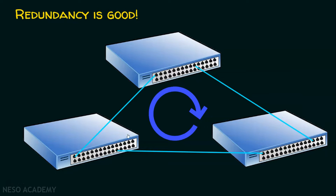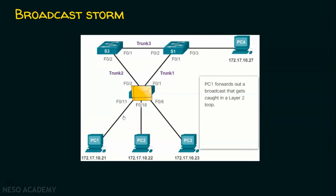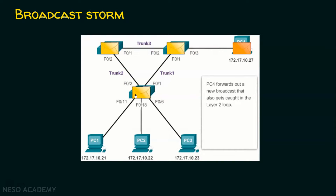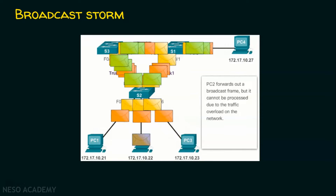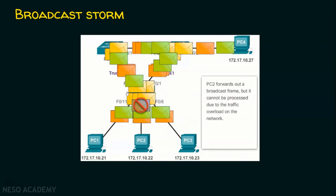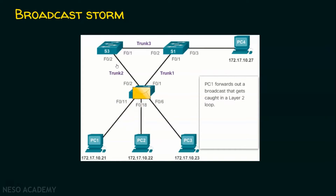The entire network will be flooded with broadcast messages only, and the network will go down. That is what we call a broadcast storm. Because of this redundant link there is a loop, and because of this loop there is a broadcast storm. Let's see it with an animation. The PC sends a broadcast message, the switch broadcasts to all ports, and at one point this broadcast creates a storm in the network, ultimately taking the entire network down. This is the actual loop.